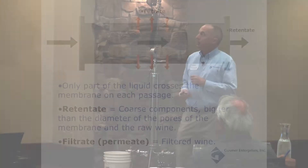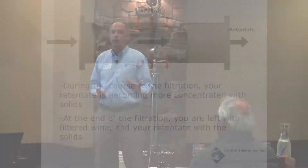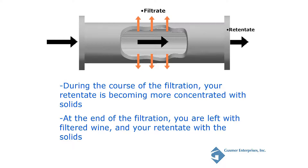What is happening is that the coarser material — the coarse components, which we call retentate — retentate is anything that doesn't go through the membrane. The retentate is getting more concentrated as you go along. What's coming out at the end is your filtrate or permeate, which is your filtered wine. During the course of filtration that retentate is getting more and more concentrated, and at the end you should be left with just brilliant, clear wine and a very high solids retentate.